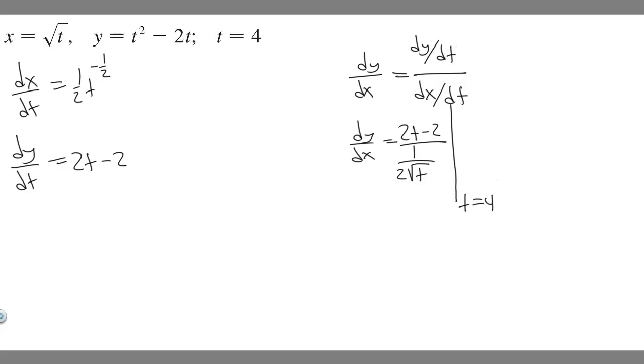At t equals 4, when we plug this in, we're going to get the slope. This is going to be the slope of our line. So let's plug it in: 2 times 4 minus 2 over 1/2 times the square root of 4. The square root of 4 is 2, so it's 1 over 1 on the bottom. 4 times 2 is 8 minus 2 is 6, so really this is just 6 times 4, which is 24. So m equals 24.